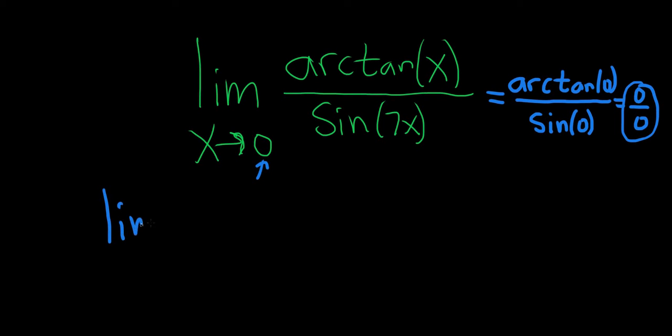So we have the limit as x approaches zero. Let's see, the derivative of arctangent is one over one plus x squared. That's a familiar formula, just taking the derivative of the top.